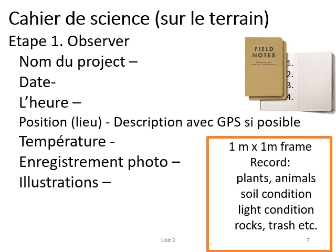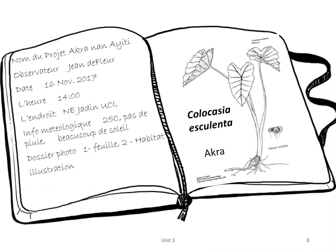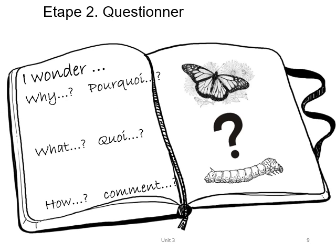This activity will help you practice being an observer. This is an example of what you might write in your field notebook. If you take pictures, make sure you write down what you took pictures of, and if you make illustrations, label them. I hope that your observations lead you to ask questions, which is step two of the scientific method.